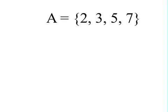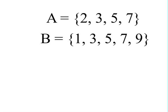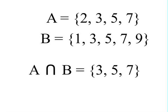You're looking at the set of single-digit prime numbers, and we're going to call that set A. And now we're looking at the set of single-digit odd numbers, and we're going to call that set B. At the bottom, we see the three numbers that the two sets have in common: 3, 5, and 7.